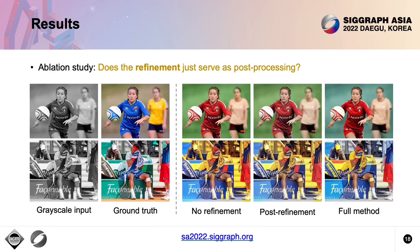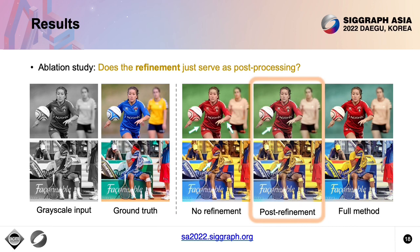We are also interested in studying the role of color refinement. Two baselines are constructed: one uses no refinement and the other separates the refinement network from the model and adopts it as post-processing. We find that the baseline with no refinement induces local artifacts, and the post-refinement baseline can only address the artifacts mildly. In contrast, our full method can correct such artifacts more effectively.